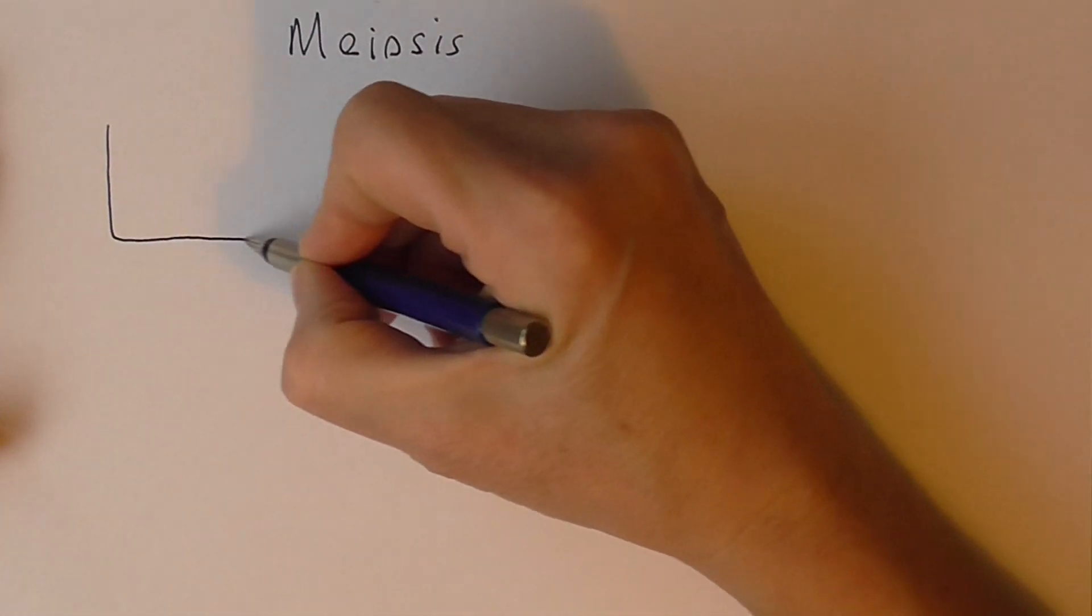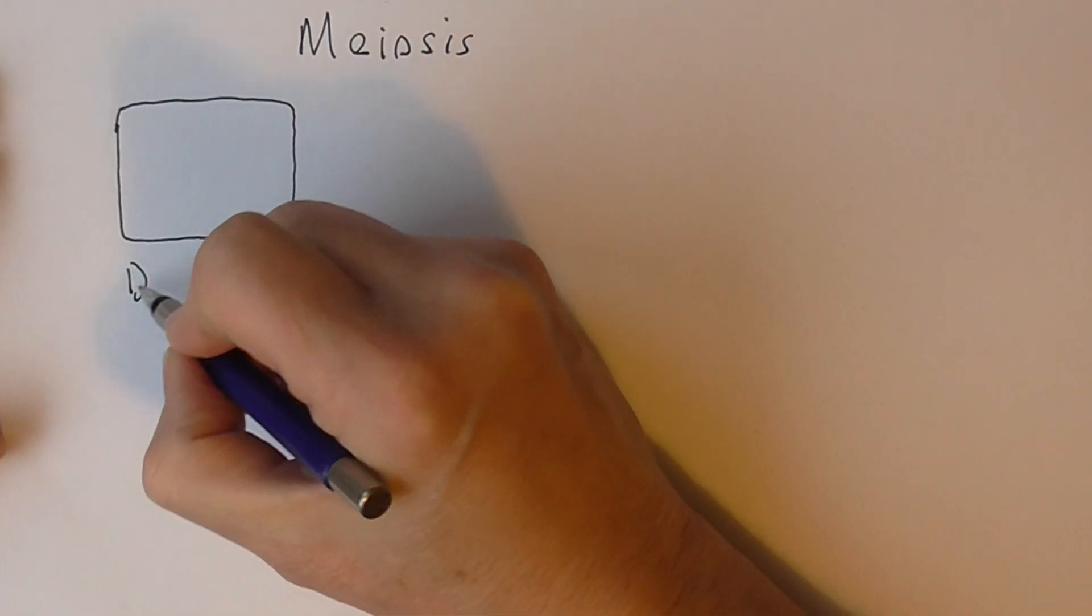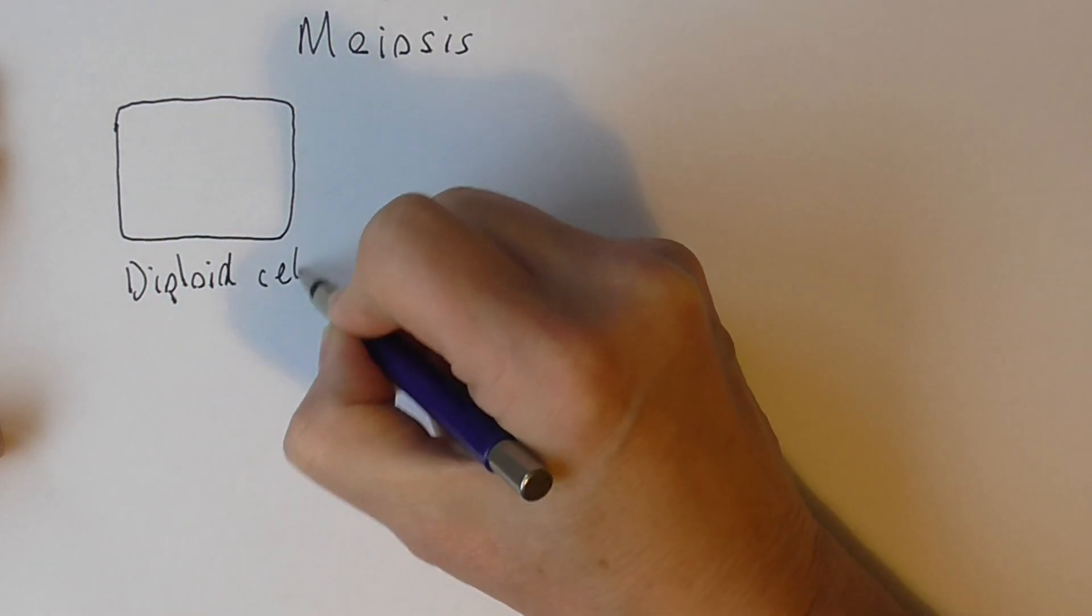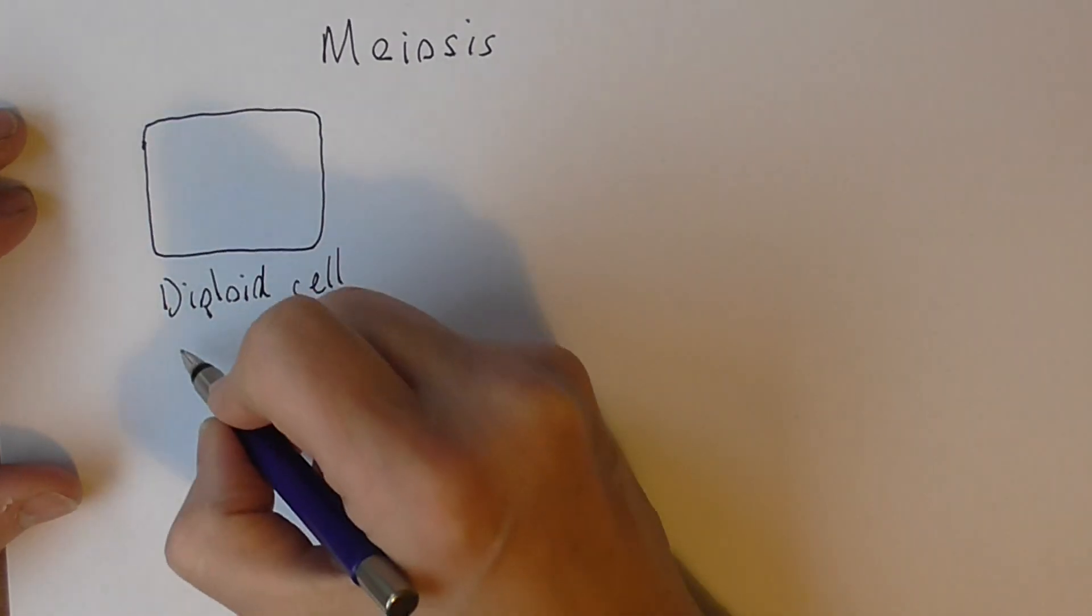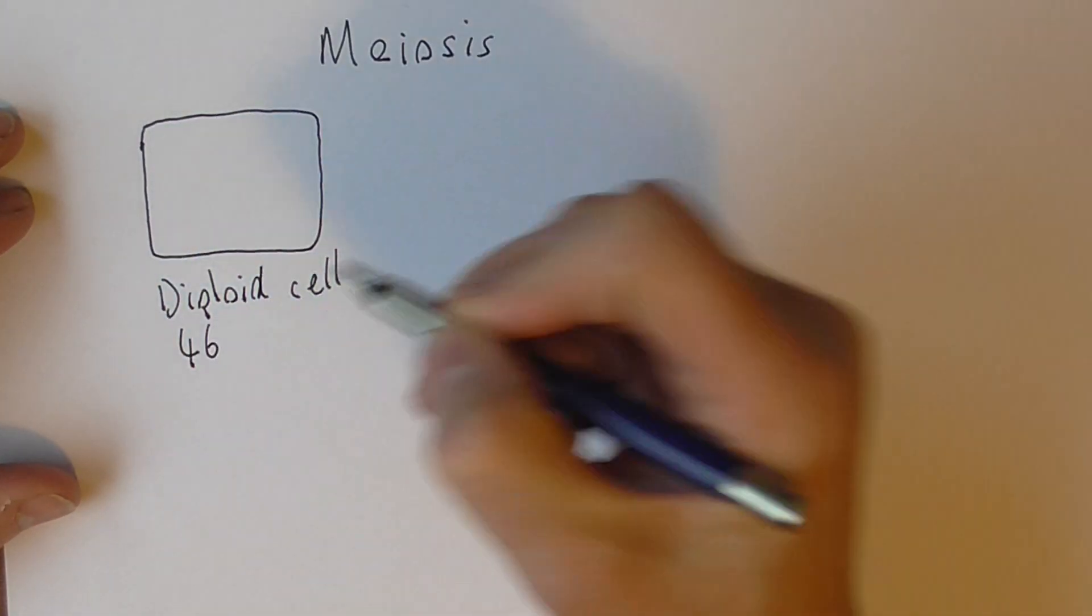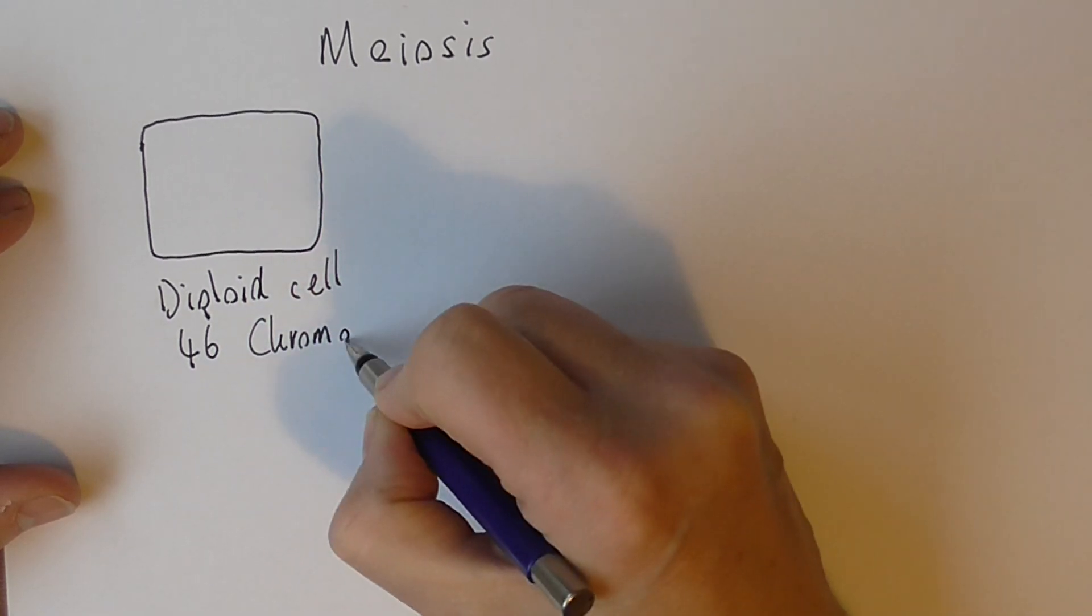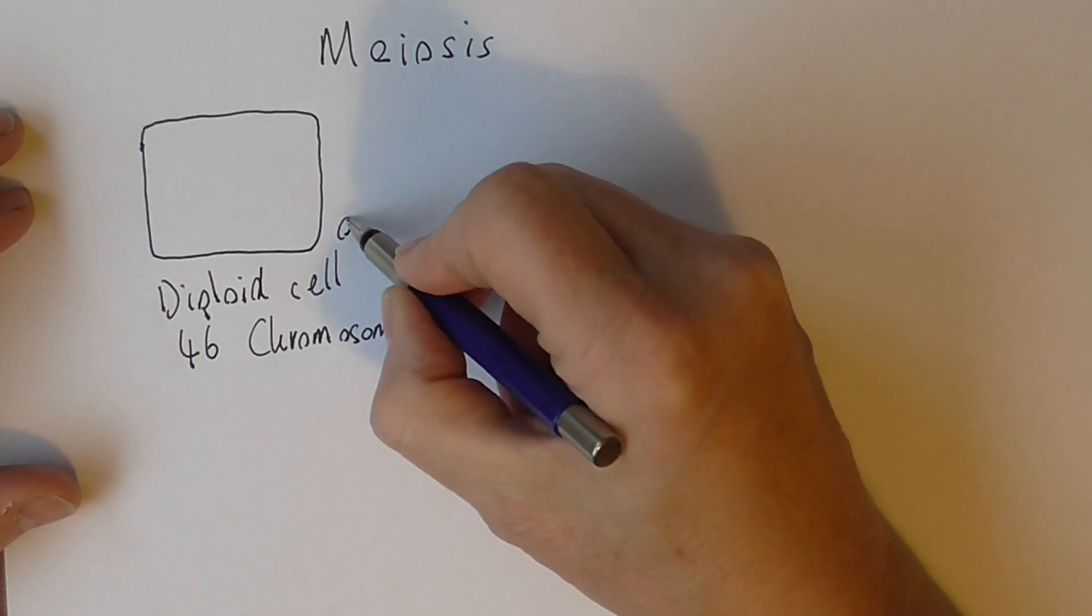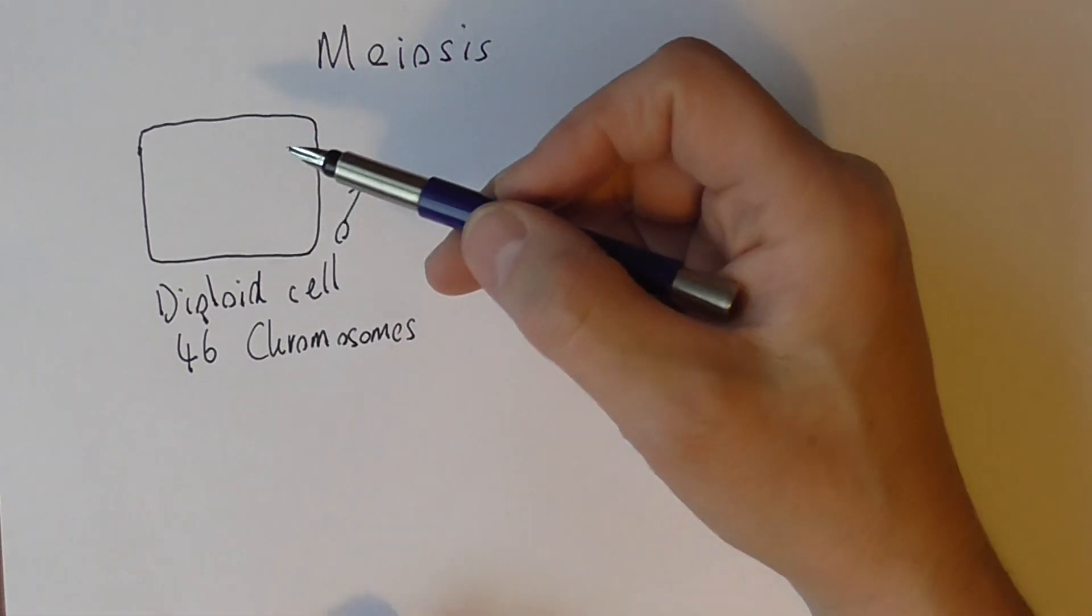If you think about it, these both have to come from parent cells, so this is a diploid cell. Diploid means it's got the diploid number of chromosomes in it, so it's got 46 chromosomes, 23 pairs. This one's a male, therefore this one is in the testes, but it contains 46 chromosomes.